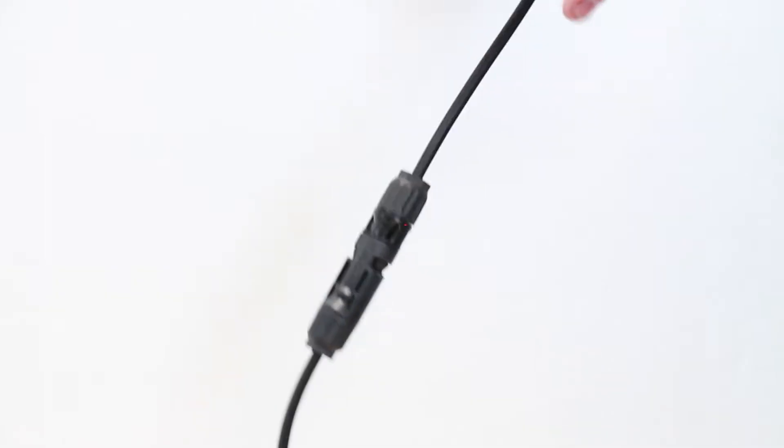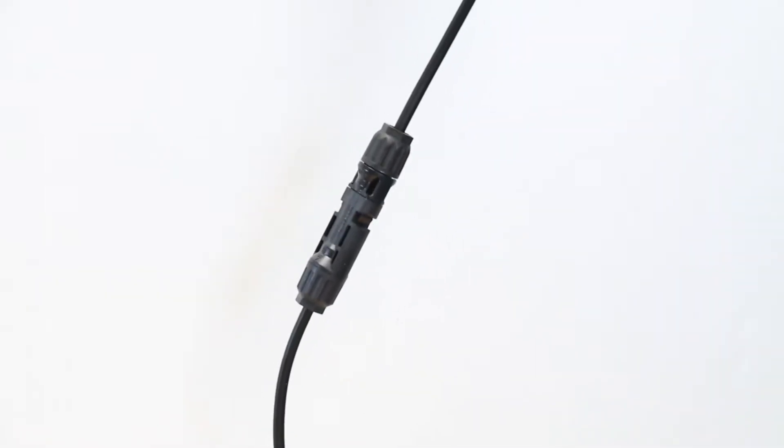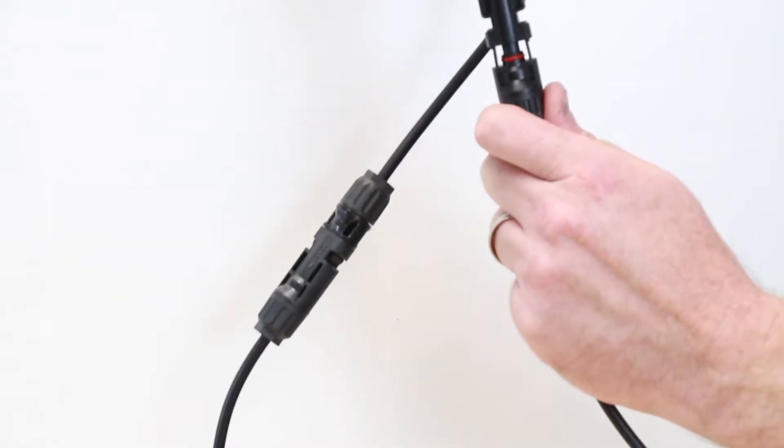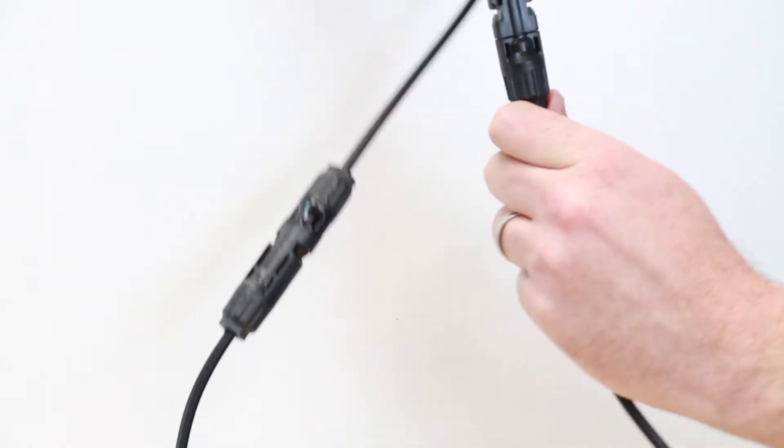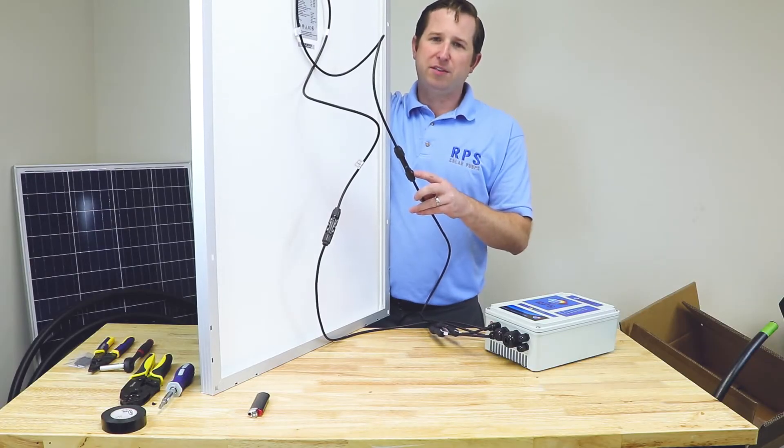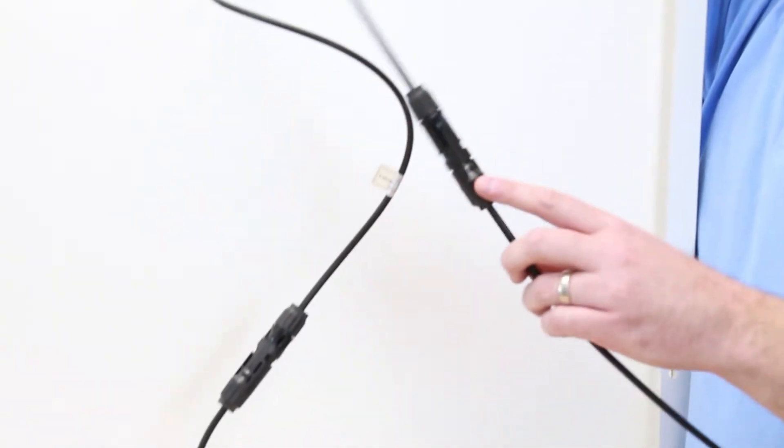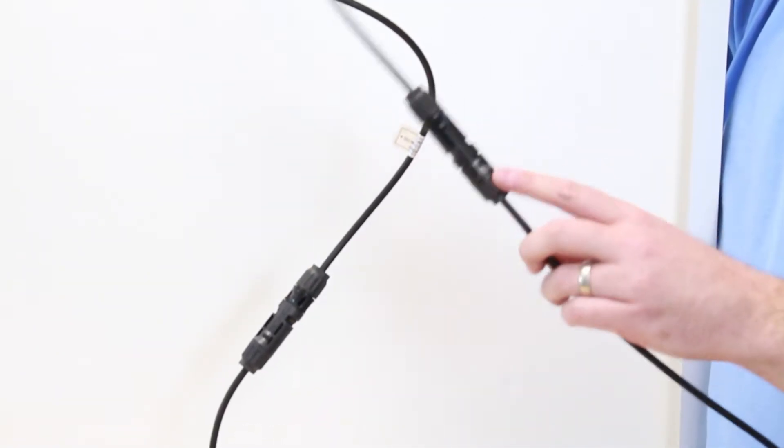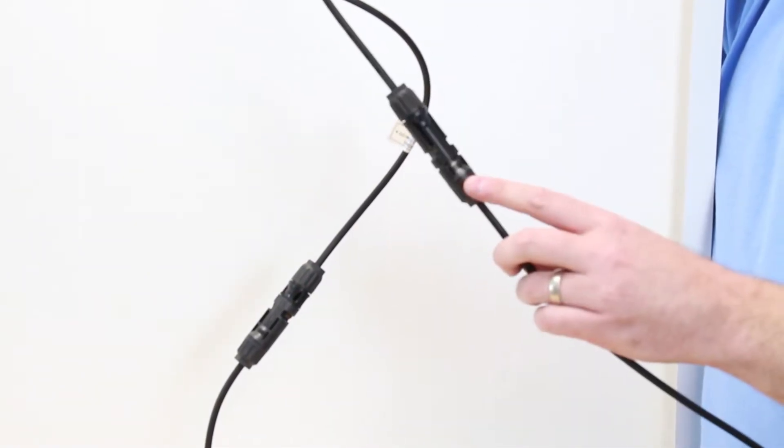Take our controller wire and simply plug it into our solar panels. They're polarized so you don't have to worry about hooking them up backwards. Connections of your solar panels are that easy. The MC4s have built-in gaskets in order to provide a waterproof connection for the outdoor environment.